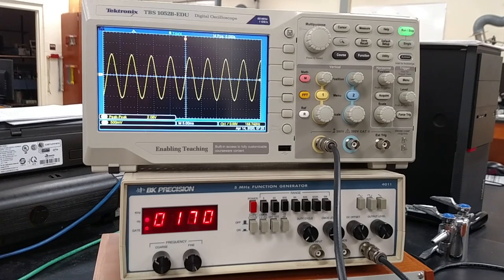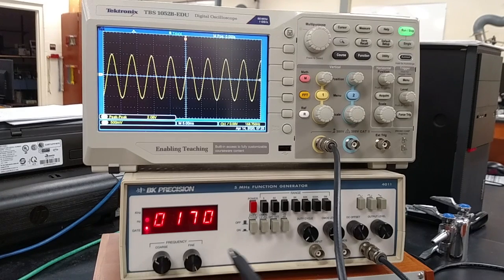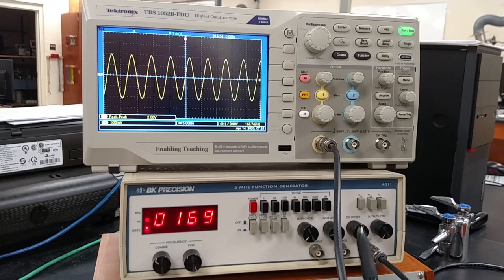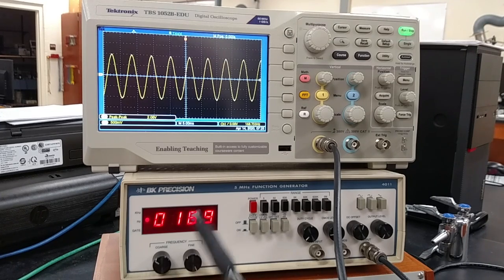We're going to stick to the sinusoidal output for all the measurements unless you want to try something different. Out of the different things you can change, we're going to ignore the duty cycle, CMOS level, or DC offset and essentially concentrate on the use of the frequency.